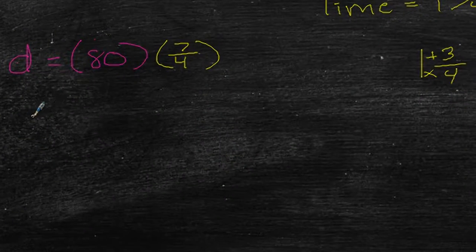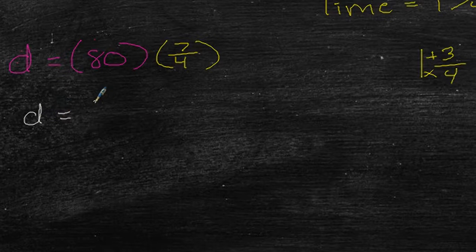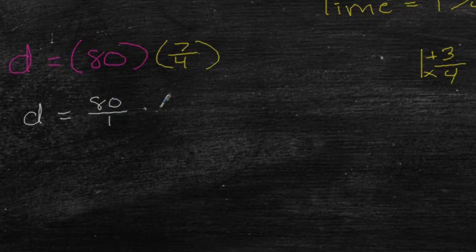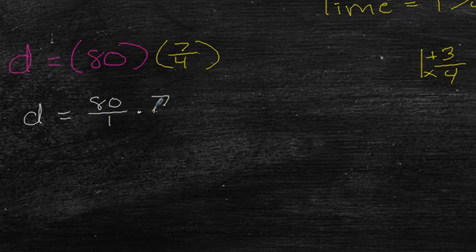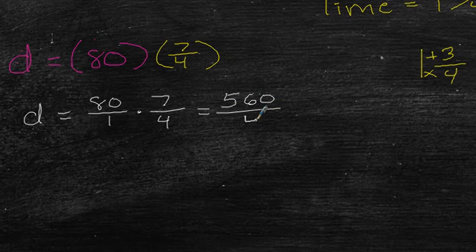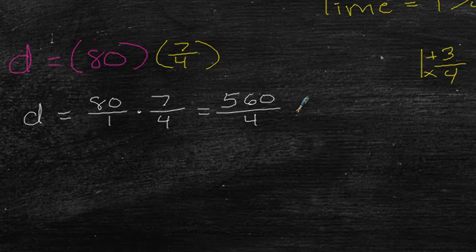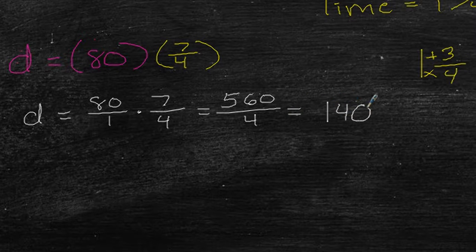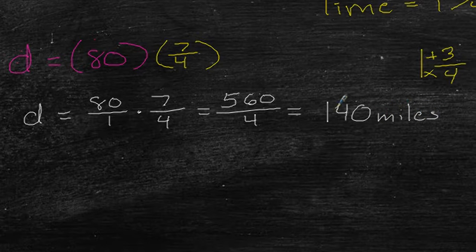So I'm going to multiply this by 7 over 4. Now, whenever we multiply, we just multiply the top number times top number bottom number times bottom number. So we get 560 divided by 4. And then whenever we divide that, we should get 140 miles. And that's my answer.